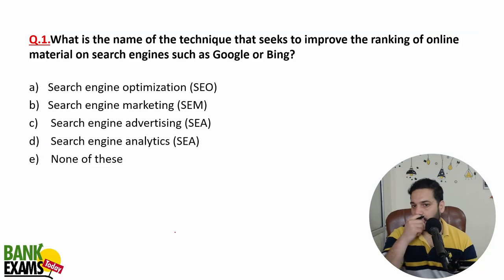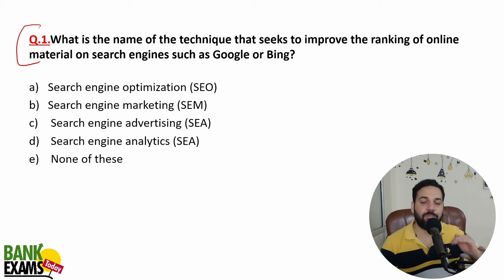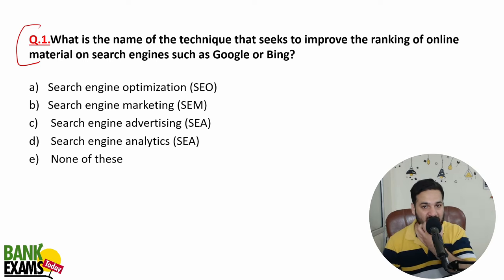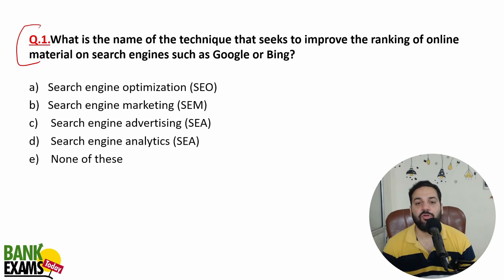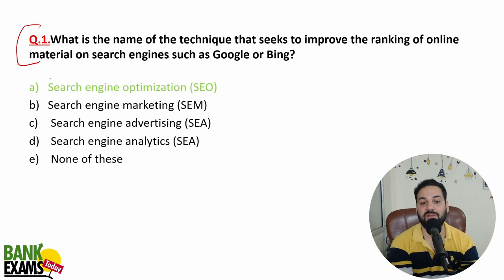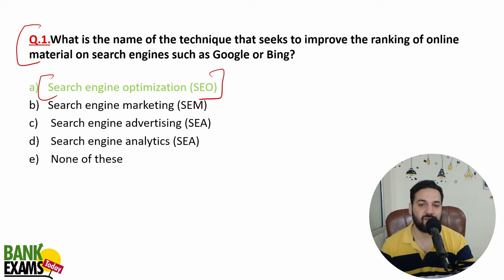MCQ: What is the name of the technique that seeks to improve the ranking of online material on search engines such as Google or Bing? To rank higher, you do link building, create useful content, and build a fast website — all these are SEO techniques. This is search engine optimization: optimizing your website from a search engine point of view.